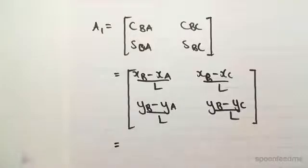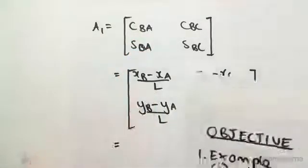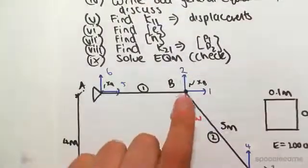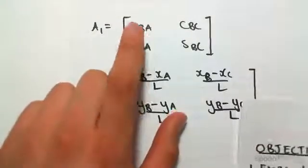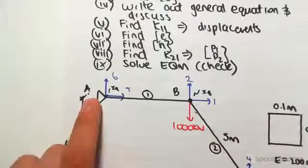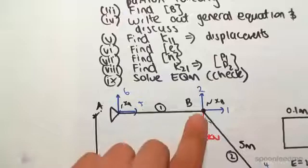So the way you do this is whatever letter comes first. So CBA—the B letter's first. The B, you go to that member, so we're going to node B. Now it goes to A, so it goes from B to A. So B to A, you're starting at B.